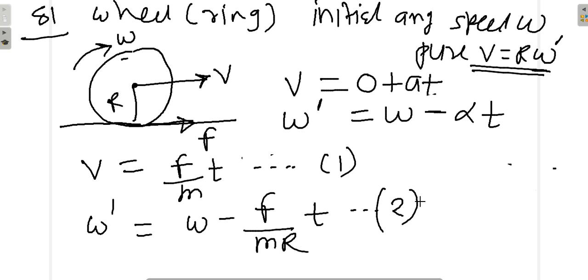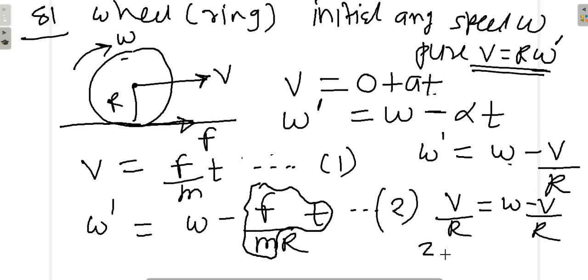Now we will apply the condition for pure rolling. The condition for pure rolling says that V is equal to R into omega dash. Instead of F upon M into T or FT upon M, I can put V. For this FT upon M, I can put V. So omega dash equal to omega minus V upon R. And omega dash is also V upon R. So V upon R is omega minus V upon R. That gives you 2V upon R as omega, so the final answer V will be omega R upon 2.